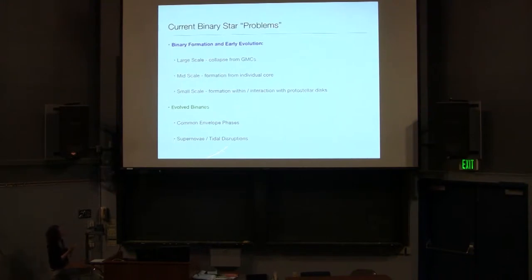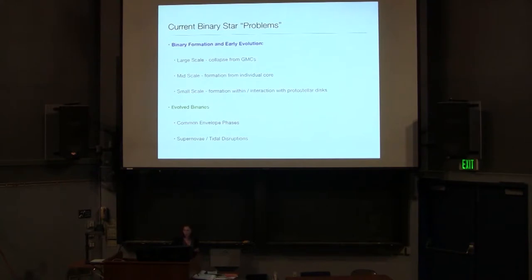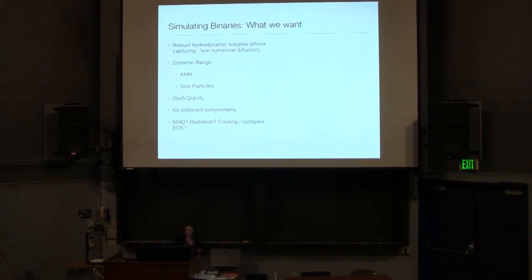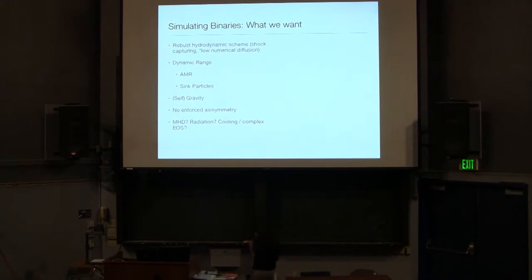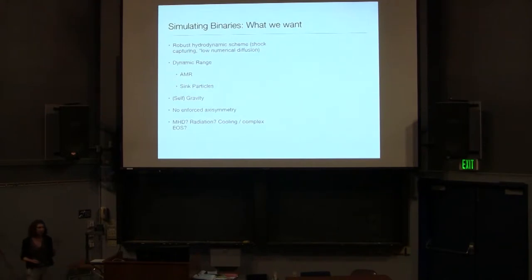This is the fundamental problem with trying to understand binary formation — there's a large range of scales we'd like to cover, and in any one numerical simulation this is a challenge. There are similar analogs to these problems in the evolved binary community, including common envelope evolution and supernova and tidal disruption problems, but I'm not going to focus on those today. Given the problems we have at hand, what do we want if we're trying to simulate a binary star system? The most obvious requirement is that for any hydrodynamic problem, we want a robust hydrodynamic scheme — something that captures shocks very well and in particular has low numerical diffusion.